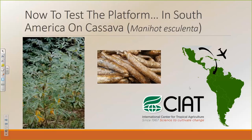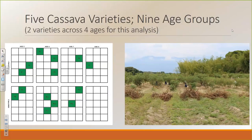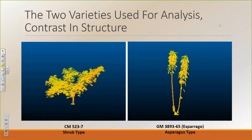Now that we had our platform, we needed a place to test it. We figured we should take it to South America and test it on cassava. So we went to the International Center for Tropical Agriculture, or CIAT, outside of Cali, Colombia. The study looked at five different cassava varieties over nine age groups, but for the results done thus far, we only looked at two varieties across four ages — a total of 14 plants. On the left you can see the very traditional shrub-type variety cassava, and on the right the more unique asparagus-type cassava.